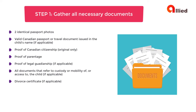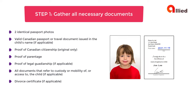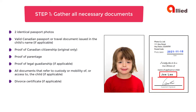Step 1: Gather all necessary documents. You need the following documents for your child's passport application. First, 2 identical passport photos. The photos must be taken no more than 6 months before the date you submit your application. On the back of one of the photos, the photographer must write their name, their complete address, and the date the photos were taken. Your guarantor must write on the back of one of the two photos: "I certify this to be a true likeness of" the child's name, and sign. Read the full photo requirements for more information — the link is in the description below.